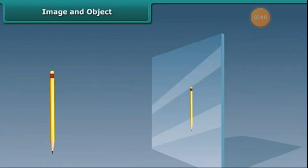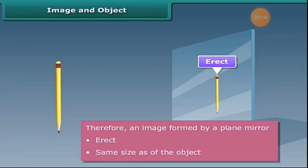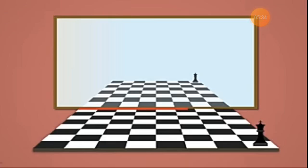Well, the image will remain behind the mirror. Such an image is called an erect image. Therefore, an image formed by a plane mirror is erect and of the same size as the object, because the size of the image and the size of the object are the same. Also, the image formed is at the same distance from the mirror as the object is.